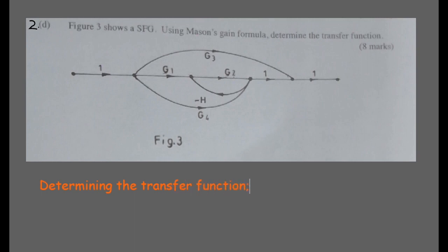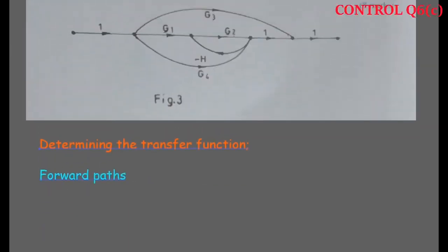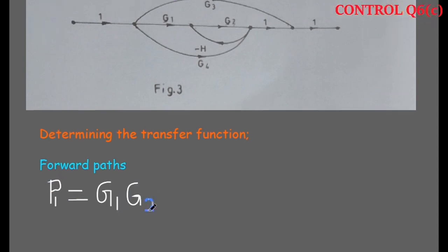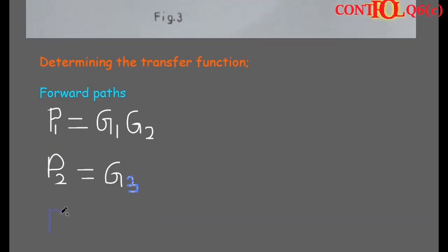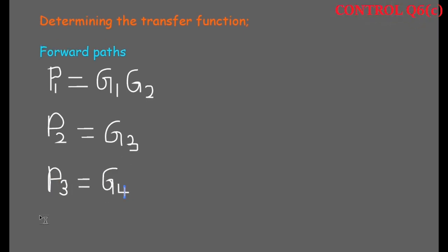The figure below shows a signal flow graph (SFG). Using Mason's gain formula, we are going to determine the transfer function. We will begin by finding the forward paths, and then the individual loops.